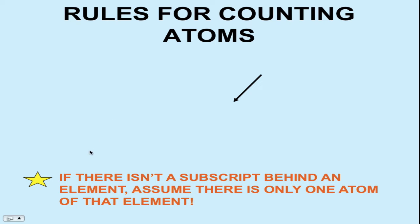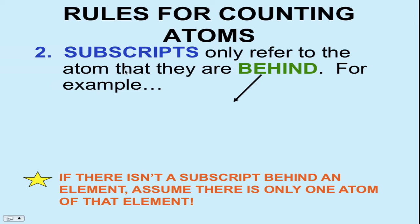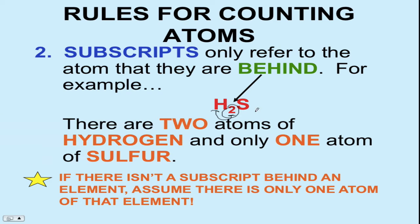Rule number two deals with subscripts. Subscripts are those tiny little numbers that are behind the atom. What's really important about subscripts is that they refer to the element behind them. So a subscript of two behind hydrogen tells me there should be two hydrogens, and then only one sulfur. The tricky thing is, if there isn't a subscript behind it, we're not going to waste time writing one — the symbol itself means there is at least one. If there's more than one, that's why we would need the subscript.